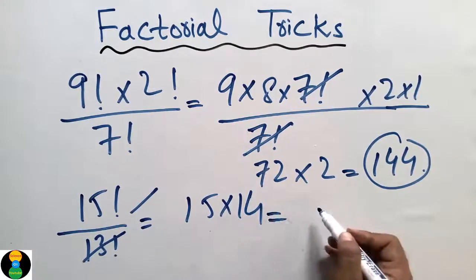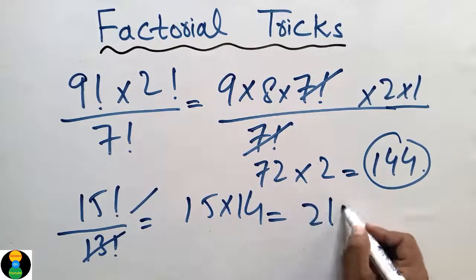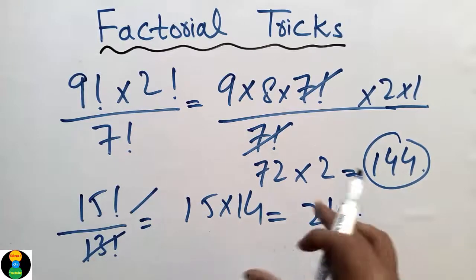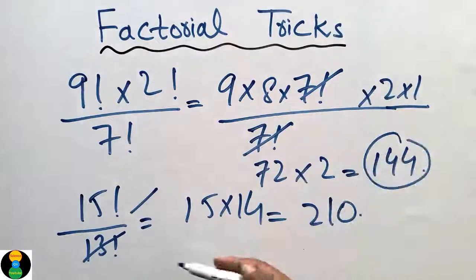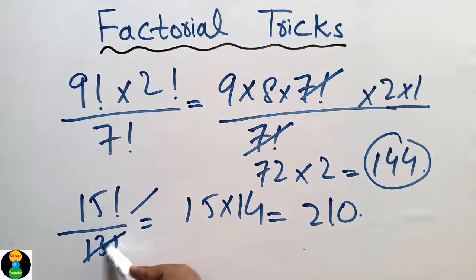It comes out to be 210. In this way you can solve any type of factorial in just two steps. How? Just cancel the denominator with the numerator. We should know that it will be cancelled afterwards.